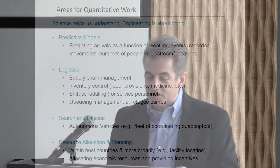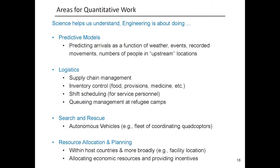To think about areas for quantitative work: science helps us understand, engineering is more about doing. One area where I think problems lie is predictive models. If we had data and could predict arrivals as a function of weather, as a function of events, as a function of the number of people in upstream locations, that would be extremely important — it would help plan and provision resources to handle the inflow of refugees.